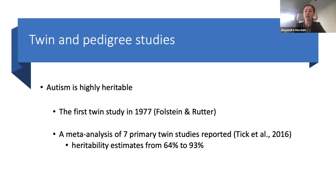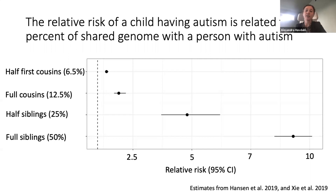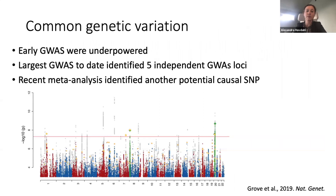In 1977, the first twin heritability study was published. A recent meta-analysis of seven primary twin studies reported that heritability estimates range from 64 to 93%. Family studies have found that the relative risk of a child having autism relates to the proportion of shared genome with affected relatives. As you can see in the graph, the relative risk increases as relatedness increases, from half first cousins to full siblings.